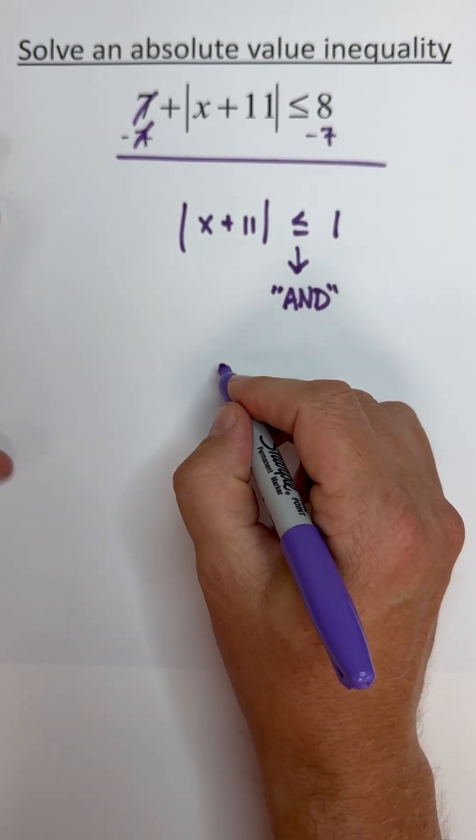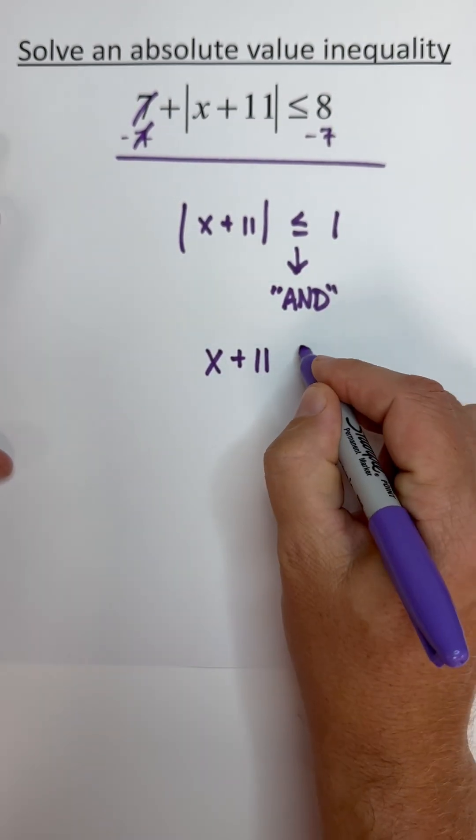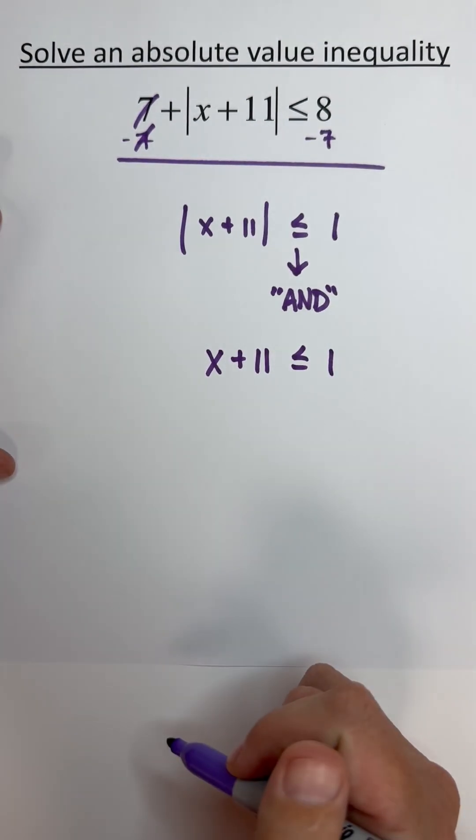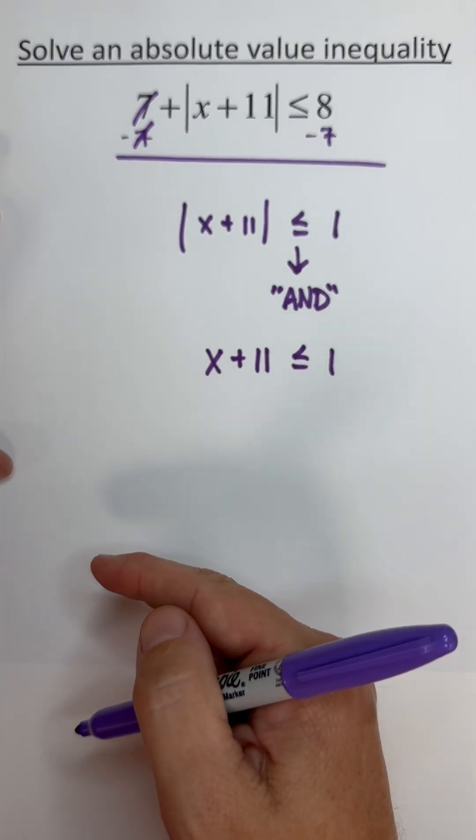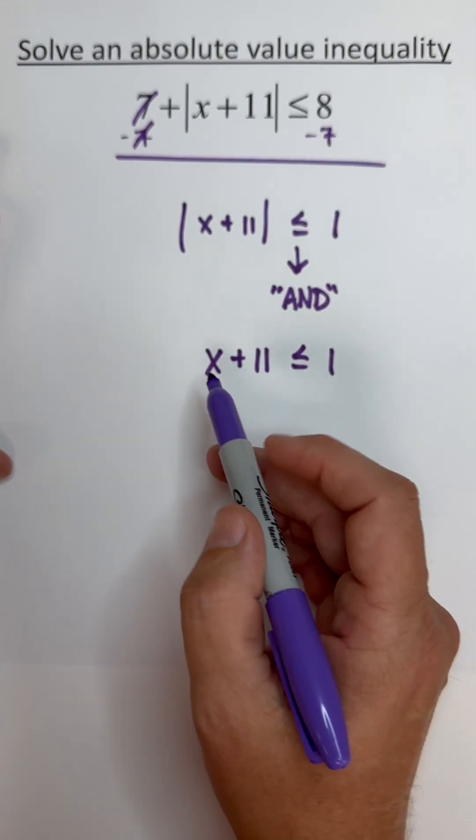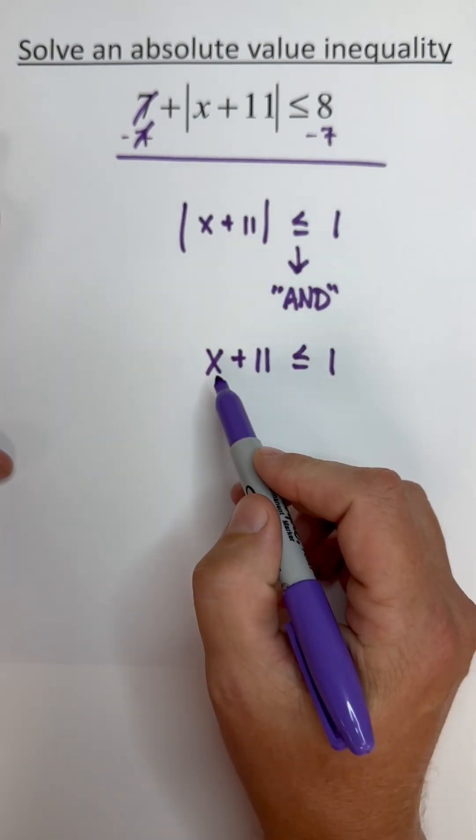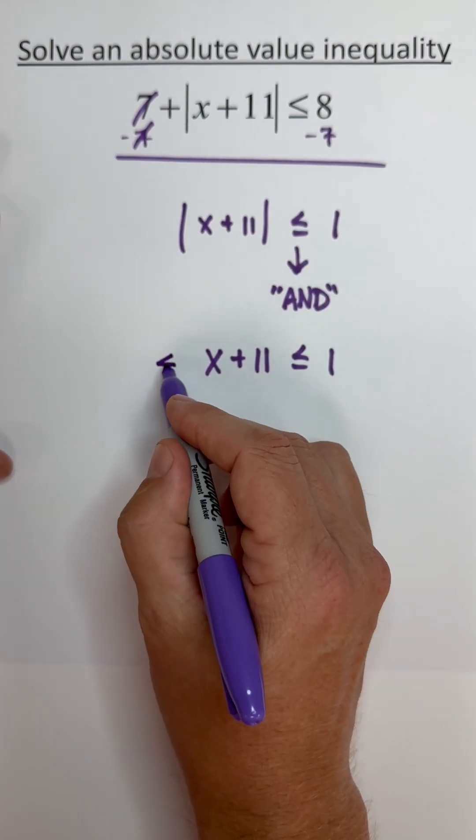Now for my second problem we're going to do two things. We're going to flip the inequality, so instead of x plus 11 is less than, now x plus 11 is greater than, it's opening towards x plus 11. And we're going to make the one negative.